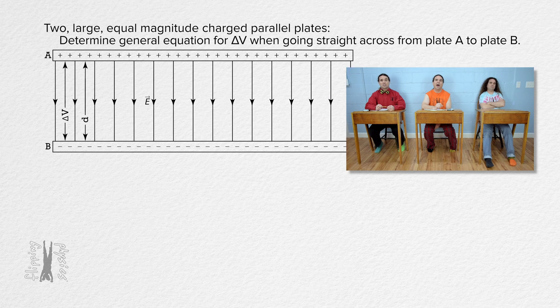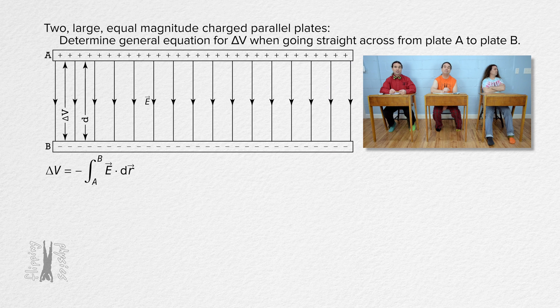While we already determined the electric potential difference equation in terms of the dot product or using cosine theta, let's use the one with cosine theta in it because we are determining the electric potential difference from plate A to plate B. The direction of dr is the same as the direction of the electric field and the angle between those two directions is zero degrees.